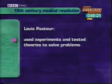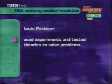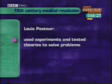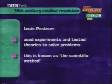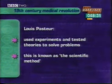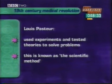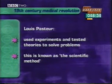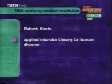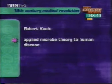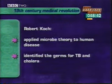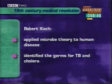Pasteur set himself a problem, conducted experiments to find a solution, evolved a theory to explain what was happening, and finally conducted tests to prove or disprove the theory. This is known as the scientific method. Pasteur didn't apply his theory of microbes to human disease, but a German physician called Robert Koch did. During the 1860s, Koch identified the germs for two of the most lethal diseases of the time — TB and cholera.